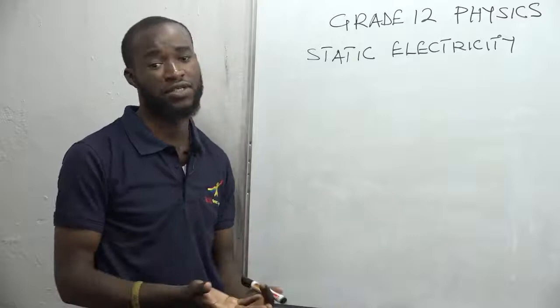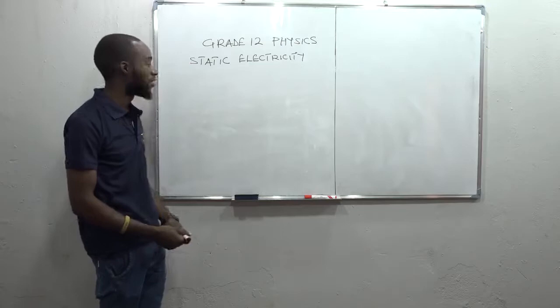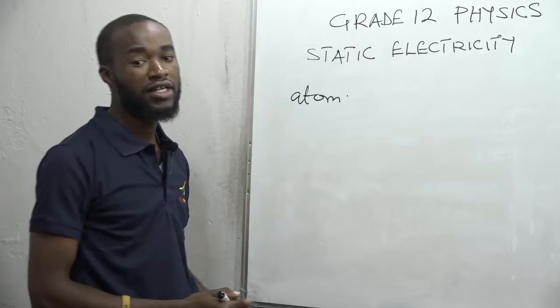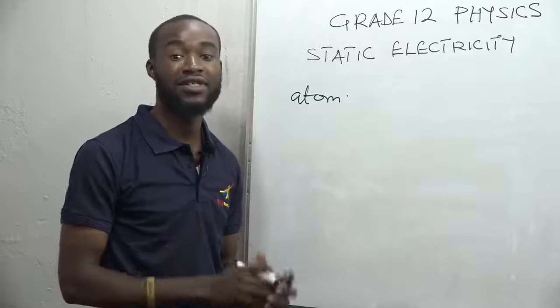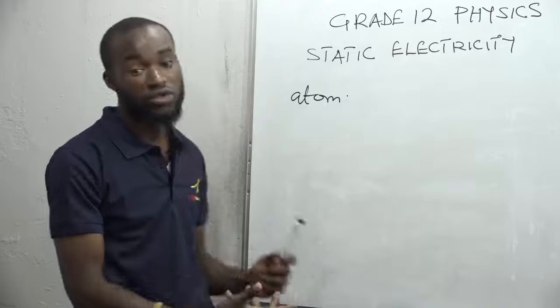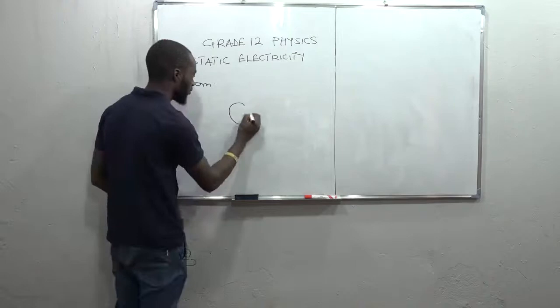Before we go further, I want to prove the existence of static electricity. To do that, I need to look at the basic unit of matter itself — an atom. In chemistry, an atom is the smallest particle of an element that takes part in a chemical reaction. But today we are interested in the subatomic particles of that atom, and I will draw a structure of an atom and explain how these subatomic particles brought about the formation of static electricity.